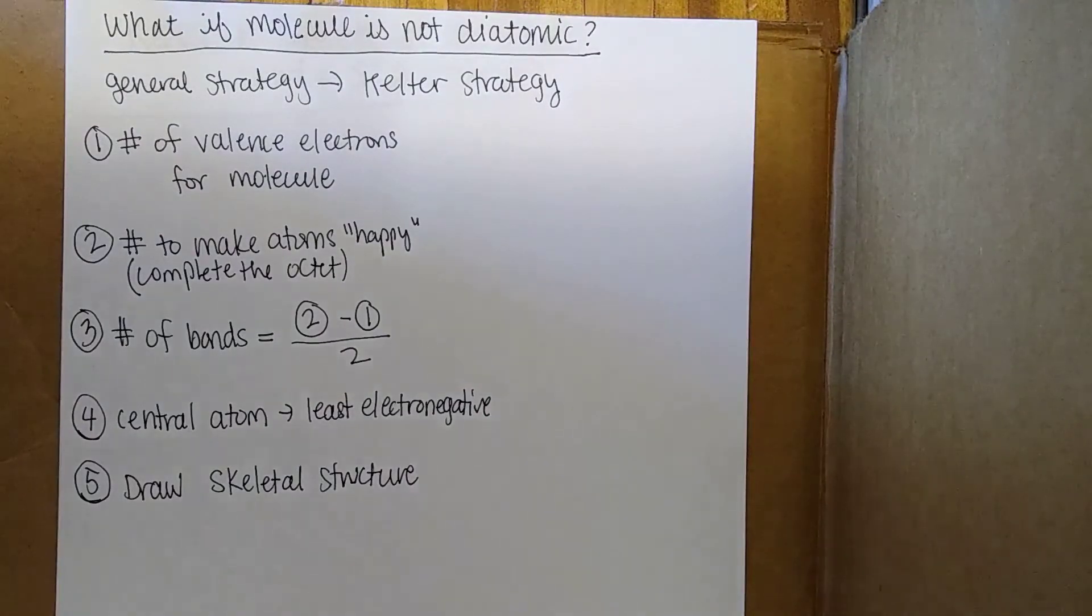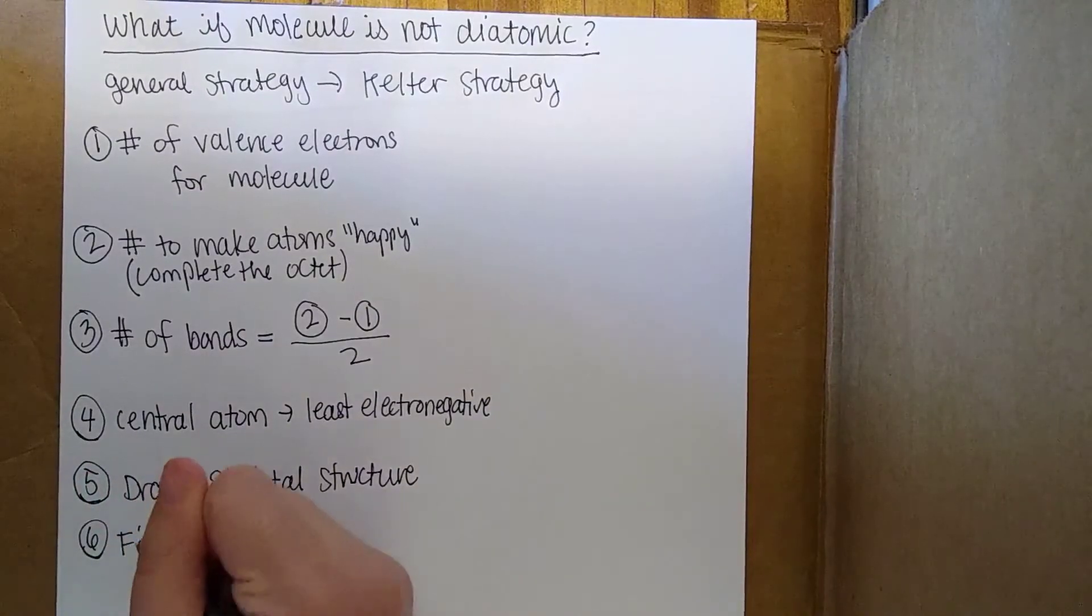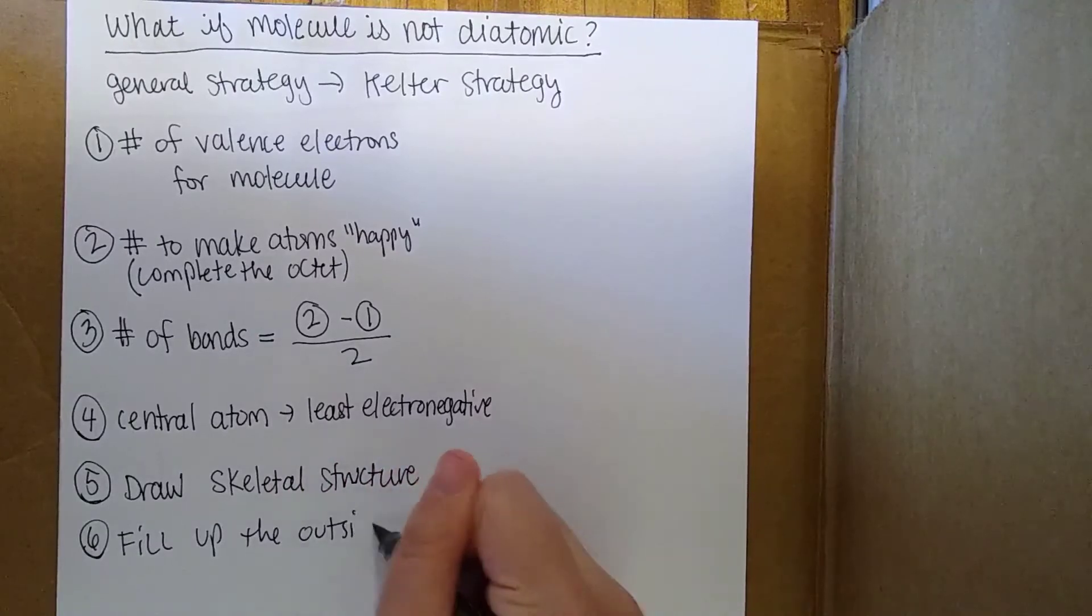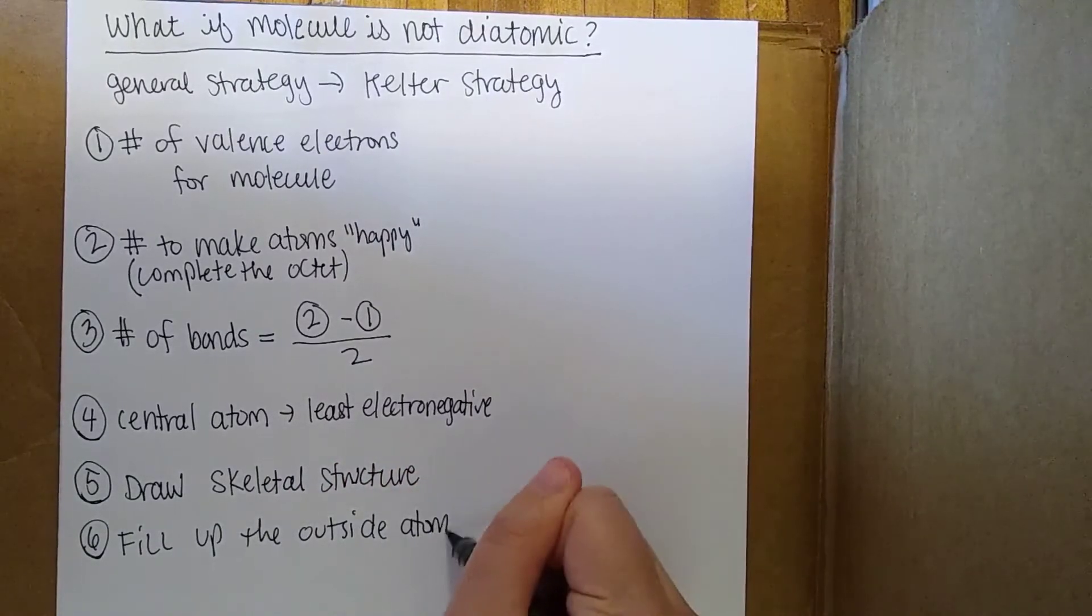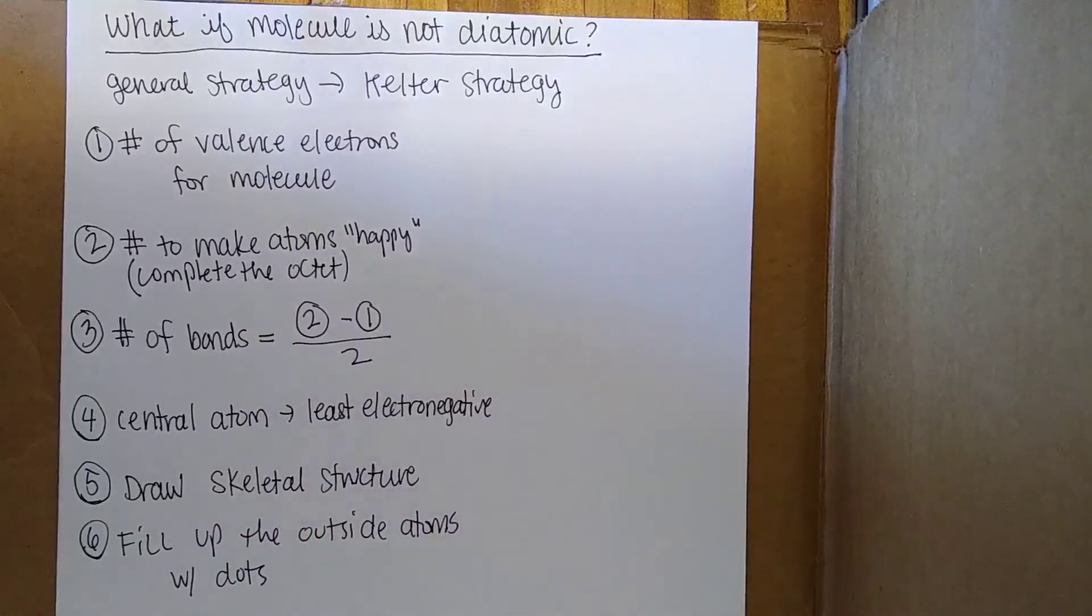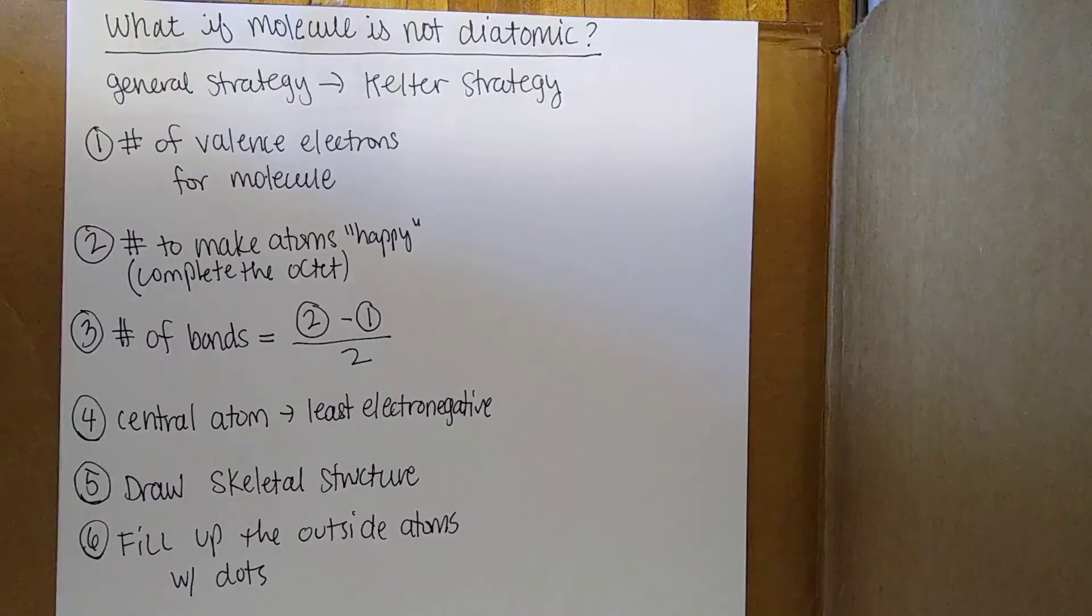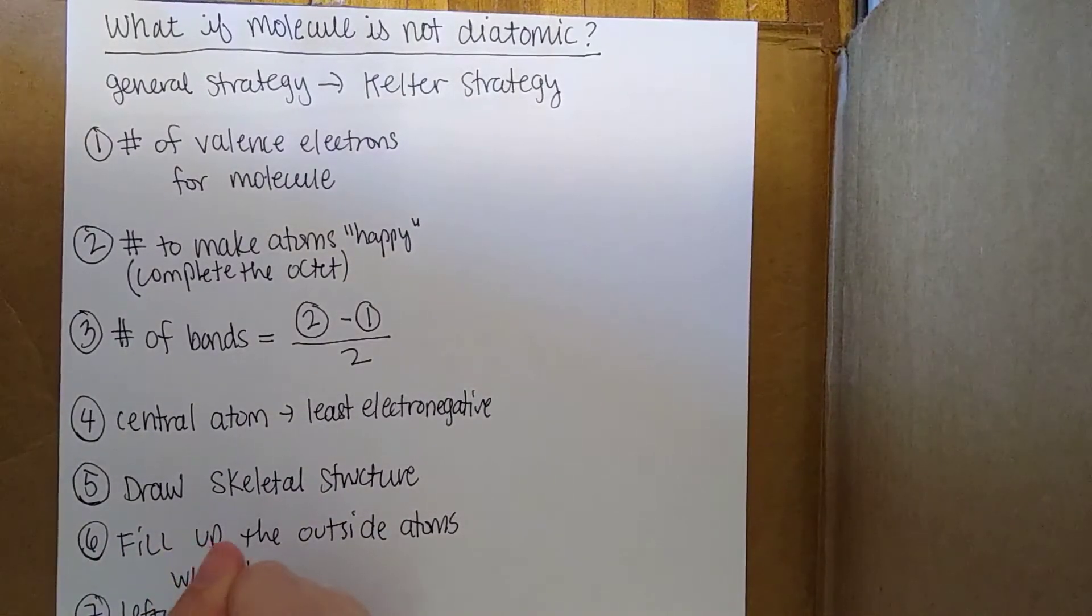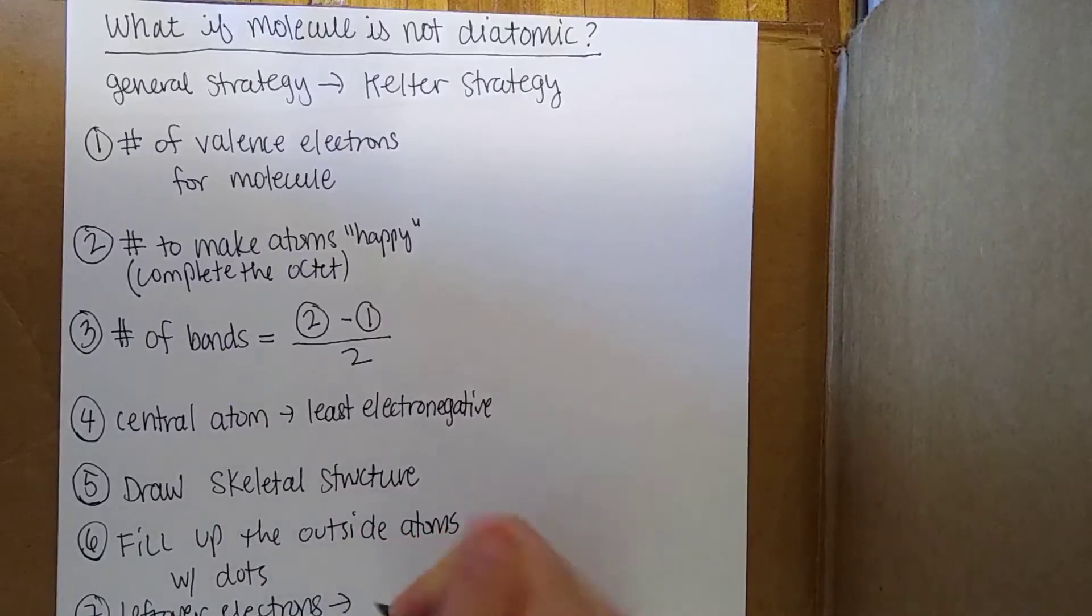Finally we are going to fill up the outside atoms with the dots or with the remaining electrons. If there's some kind of error you'll be able to see it right away because you'll be left with something that doesn't have a completed octet. If there are leftovers, leftover electrons go on the central atom.